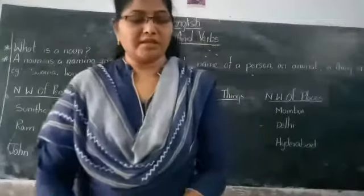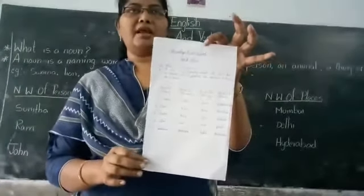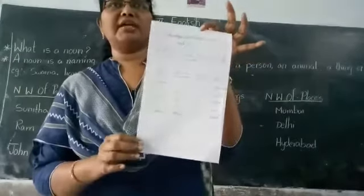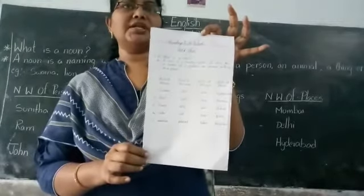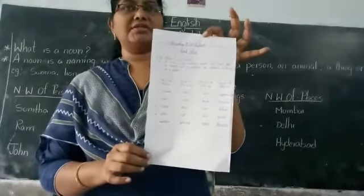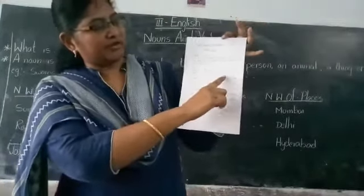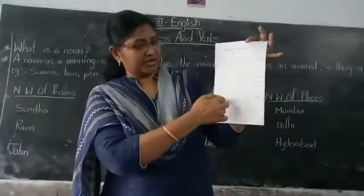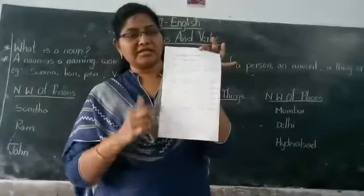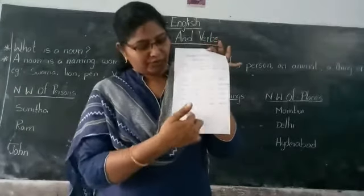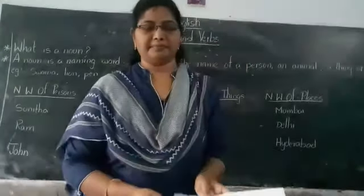Now, coming to our worksheet. Look at it once. I have given nouns here. What is a noun? Definition: a noun is a naming word. It can be the name of a person, an animal, a thing, or a place. I have given naming word of persons, naming word of animals, naming word of things, and naming word of places, with examples. Make sure everyone notes it down and writes it once. If you know more names, you can add them. Thank you, children.